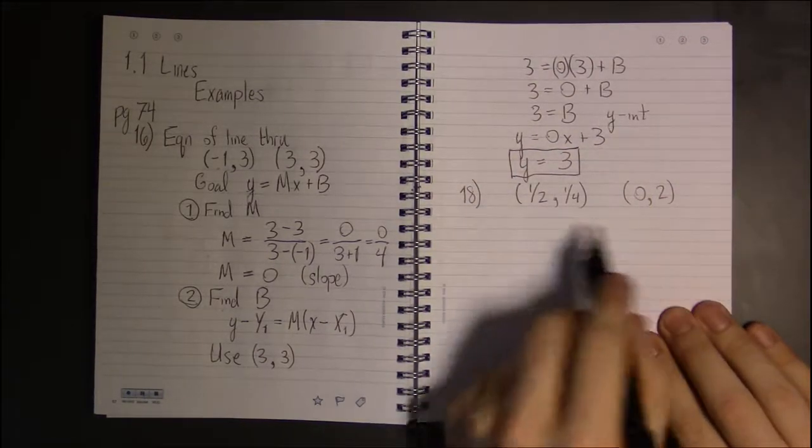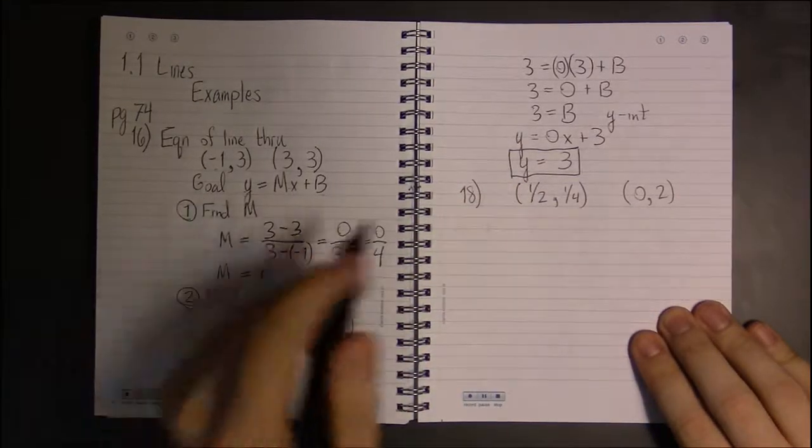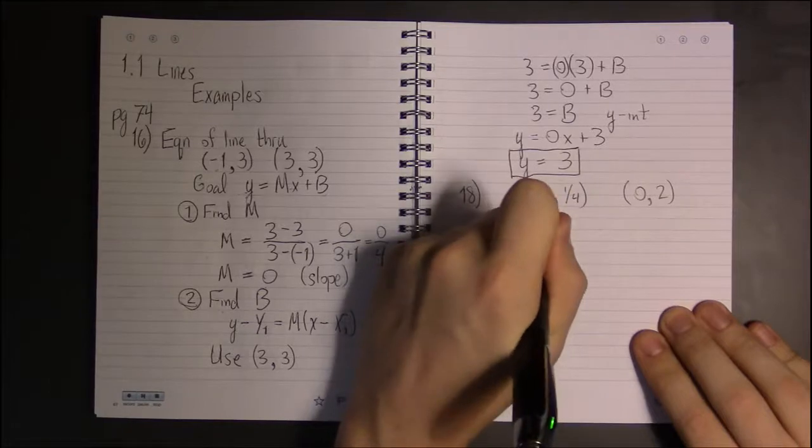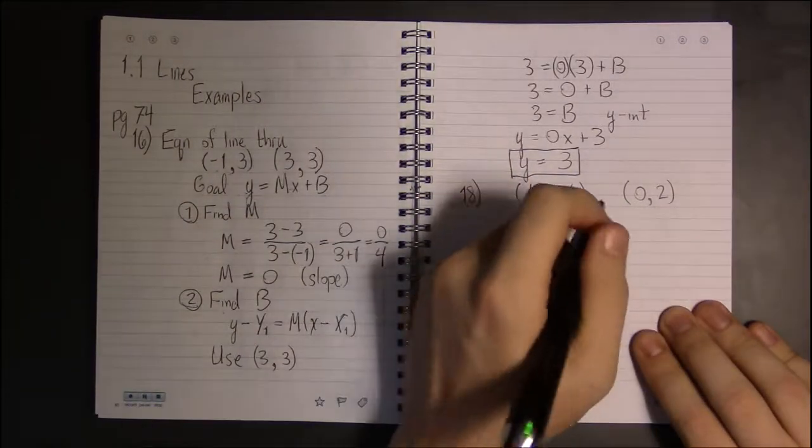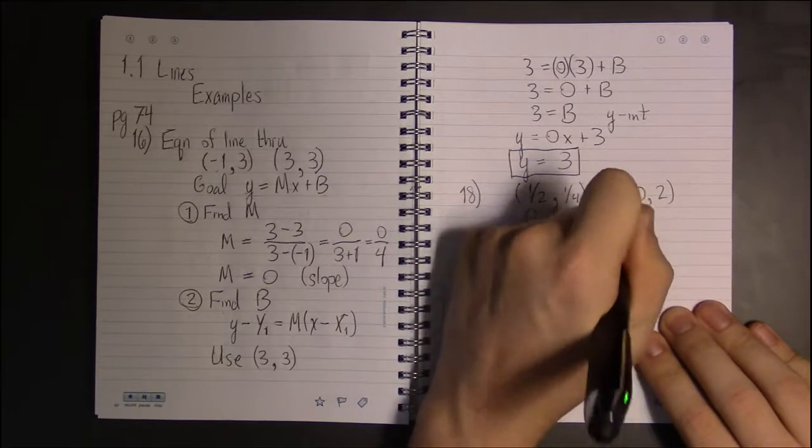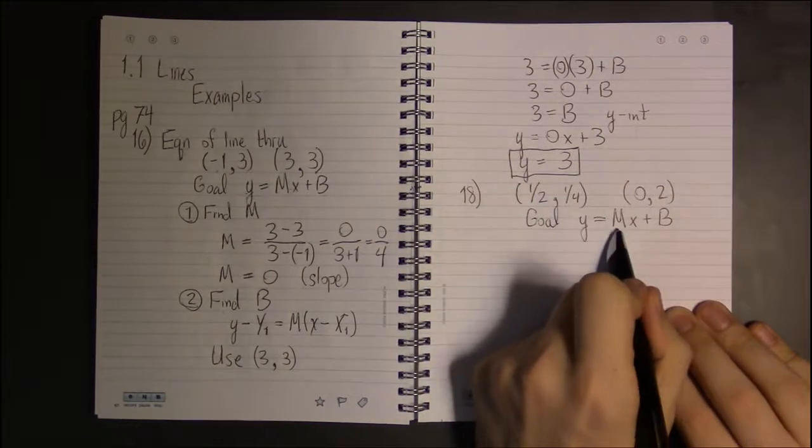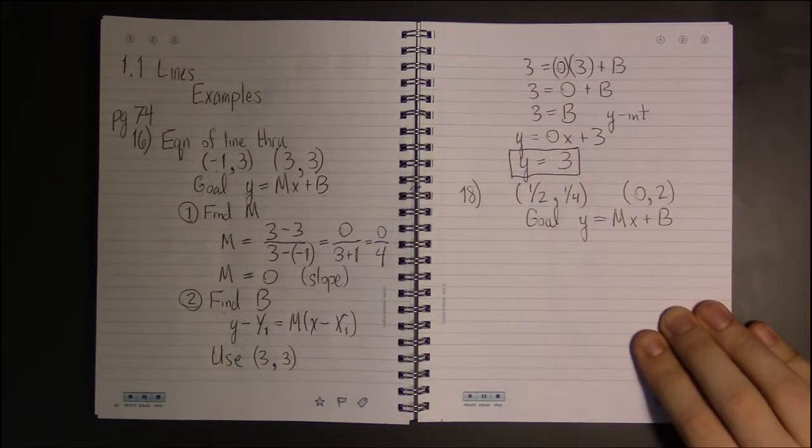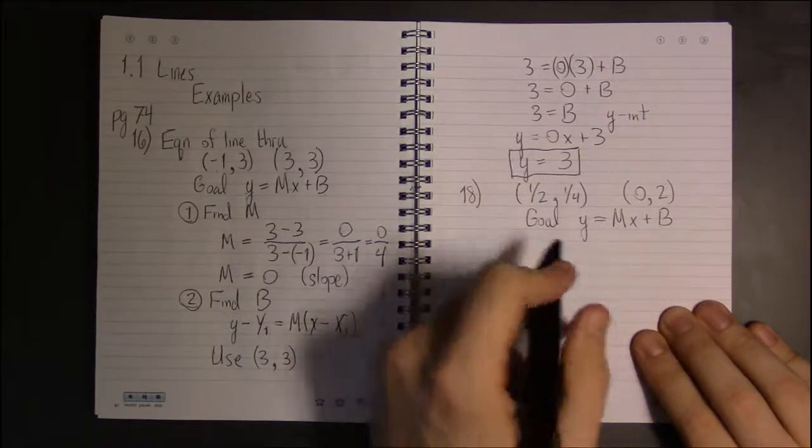Now there'll be a couple ways to find B in this problem as we'll see later on, but remember our goal here: we're supposed to find the equation of the line that passes through these two points. That means our answer is going to look like this except we're going to be writing in numbers for M and B. But before we can do that we have to find out what are the right numbers for M and B.